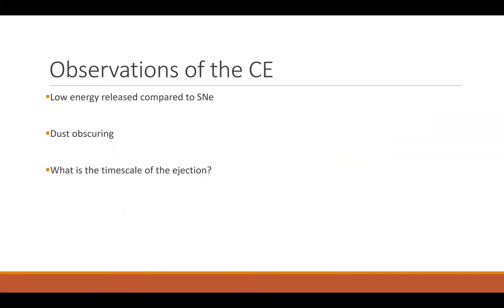Regarding observations of the common envelope: one problem is that the energy ejected is not high enough compared to a supernova, so it's very hard to detect. We also see that a lot of dust forms during this process — both in our calculations and in actual observations of post-common envelope systems — which obscures what we see. We also don't really know the timescale of this ejection: does it happen on a dynamical timescale of the plunge-in phase, or on a longer timescale? These are still open questions.